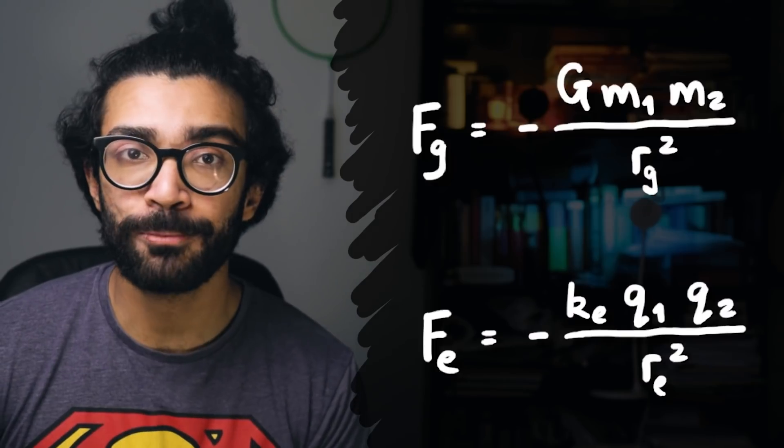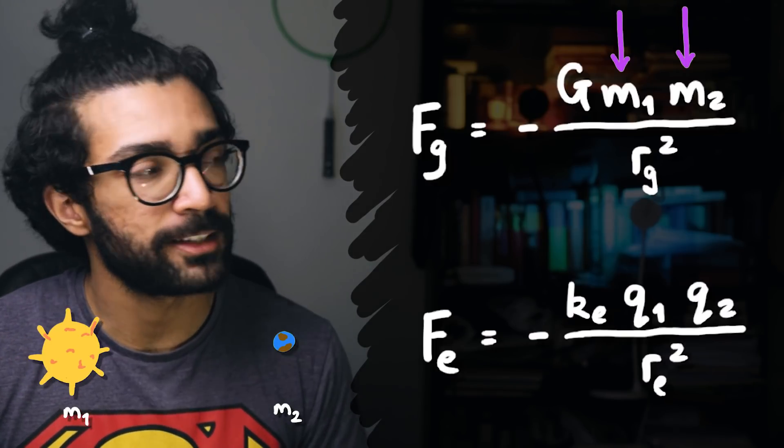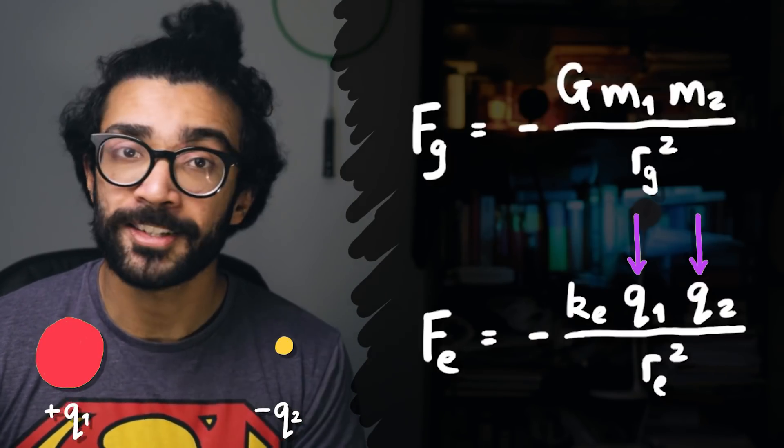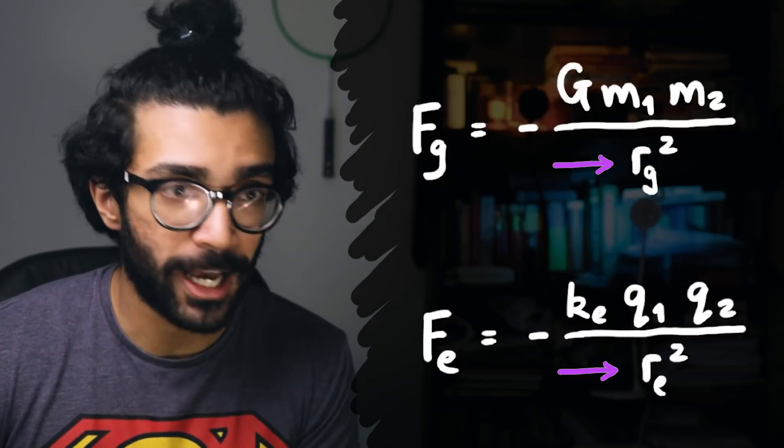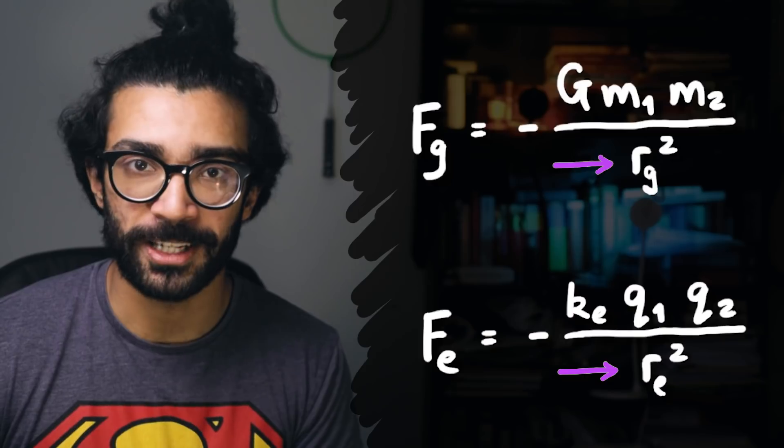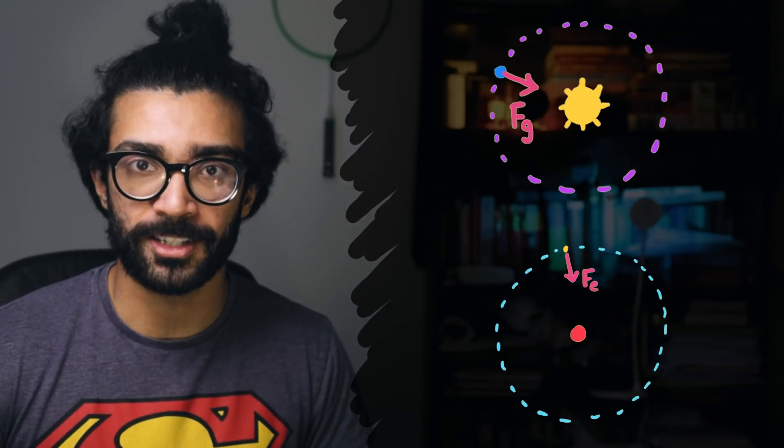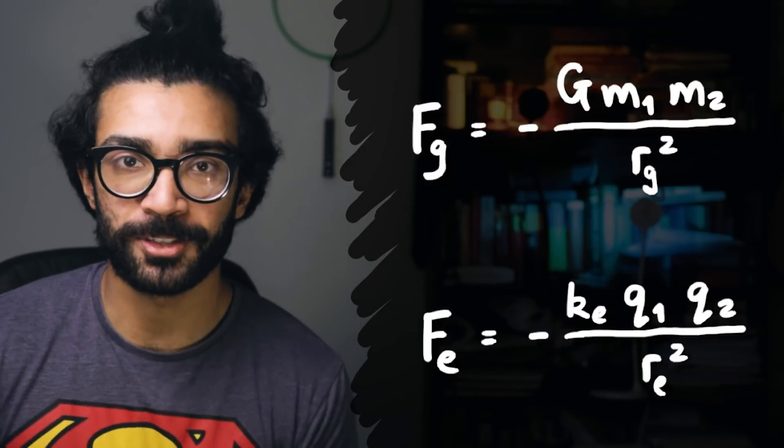And in the gravitational case, we see that the force is directly proportional to both the mass of the sun and the earth, whereas down here we can see that the force is directly proportional to both the charges of the nucleus and the electron. Lastly, both of these forces are inversely proportional to the square of the distance between the two objects being considered. And so it's not just the visual similarity between the large-scale solar system and the small-scale atom that's so appealing, it's actually a mathematical similarity as well.